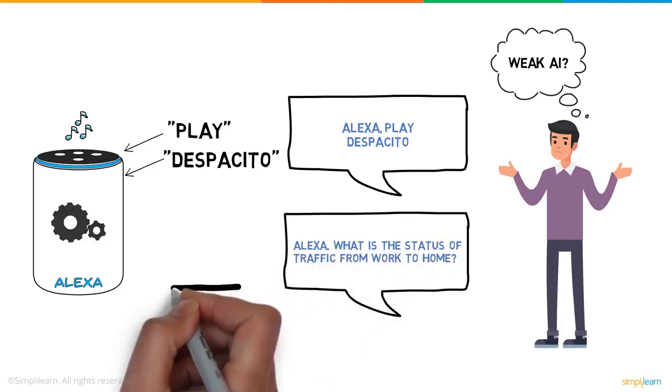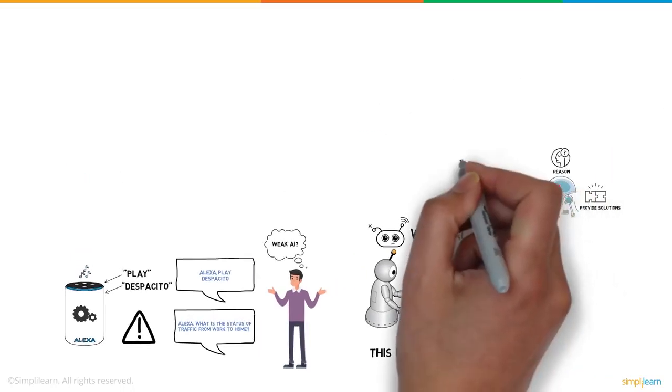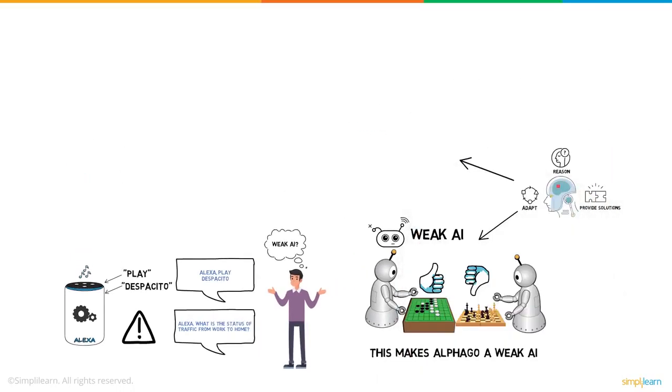try asking Alexa the status of traffic from work to home. Alexa cannot provide you this information, as she is not trained to. And that brings us to our second category of AI – Strong AI.